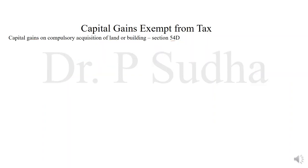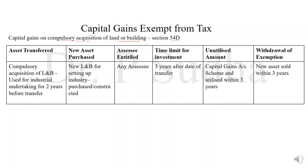The next section is section 54D. As per this section, if there is any compulsory acquisition under any law — if a land and building is compulsorily acquired — then the capital gain will be exempted. The asset that is sold is land and building, which is compulsorily acquired under a law. This land and building must be used for industrial purpose, for an industrial undertaking, for at least 2 years before the date of acquisition. If there is a capital gain on this compulsory acquisition, out of this capital gain, the new asset purchased should be another land and building — purchased or constructed — and it should be used for industrial purpose.